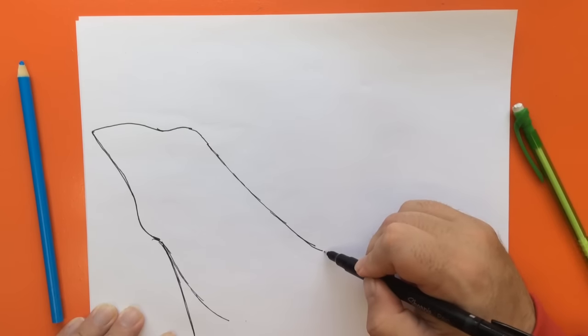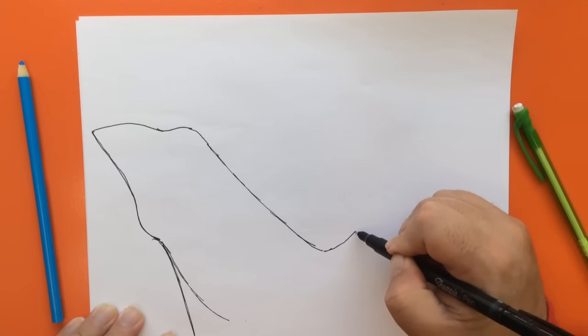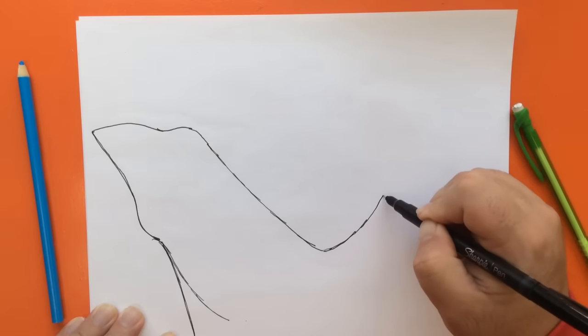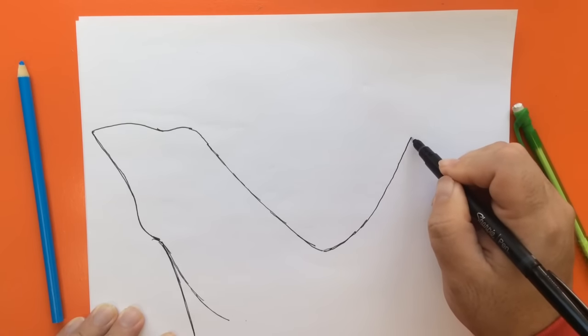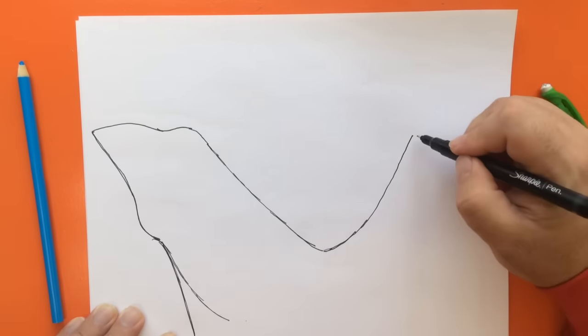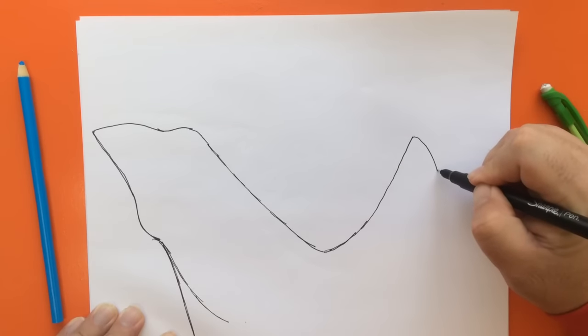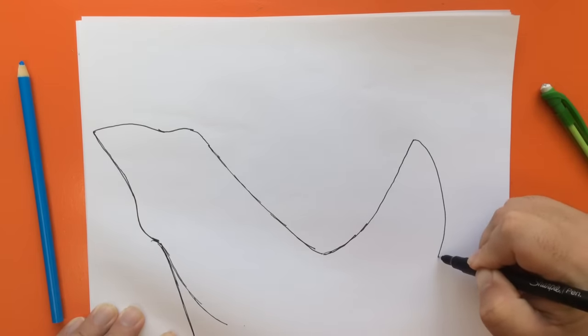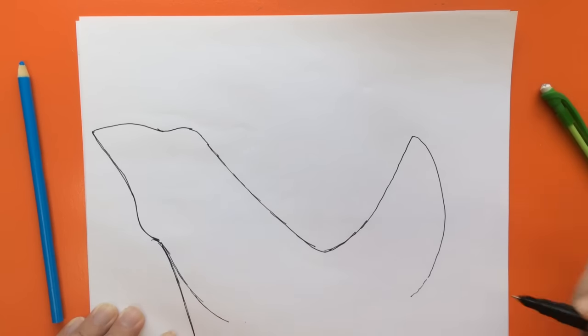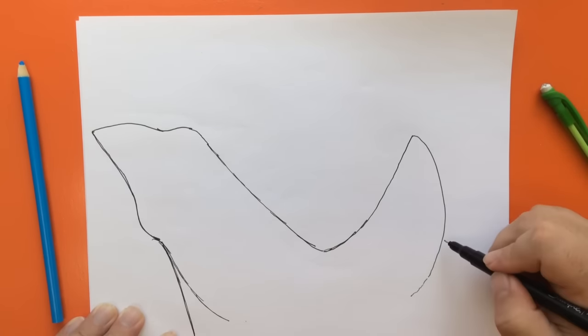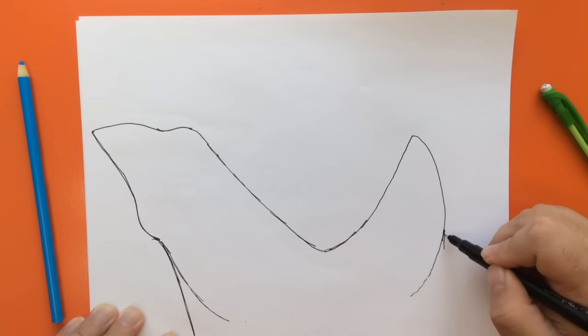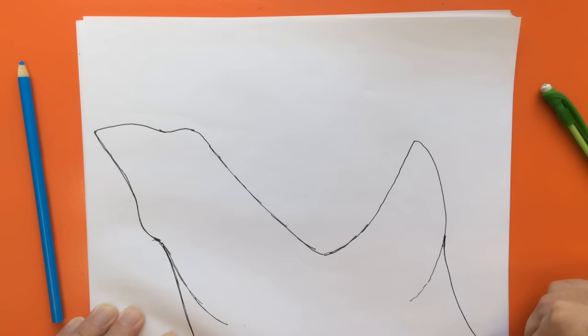My next step is the lower jaw, which is wide open over on this side. I'm going to bring this line up and stop it right about here, and then bring down the lower jaw line underneath his head like this. And then one more line down here.